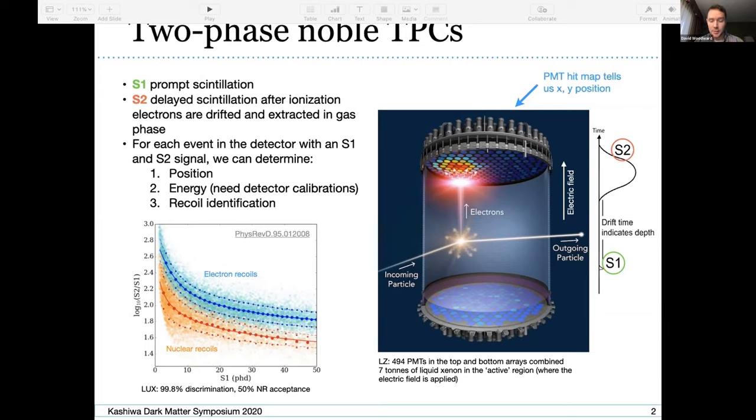LUX is able to demonstrate 99.8% discrimination power between these two recoil channels with 50% acceptance of the nuclear recoils, so everything below the mean of this yellow orange band here. Bigger detectors have slightly less discrimination power, but still very high. Nominally for LZ we're assuming 99.5% discrimination.